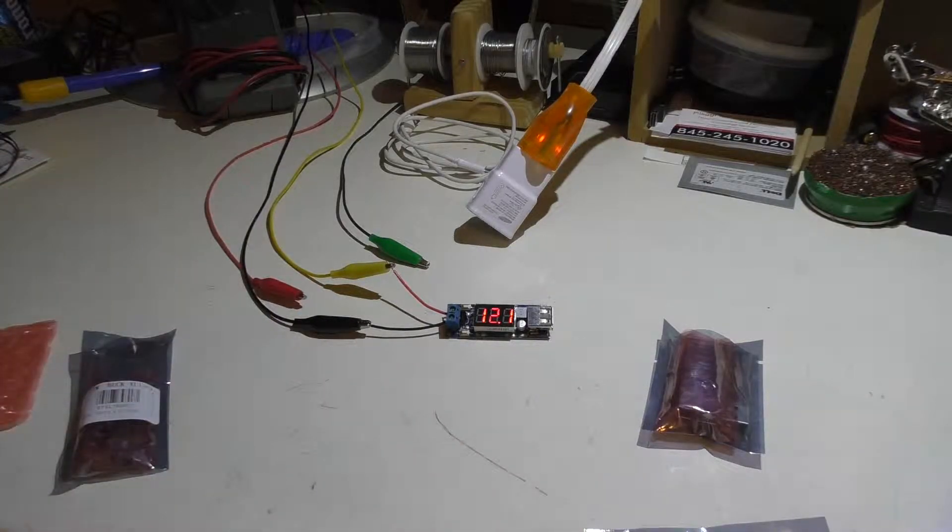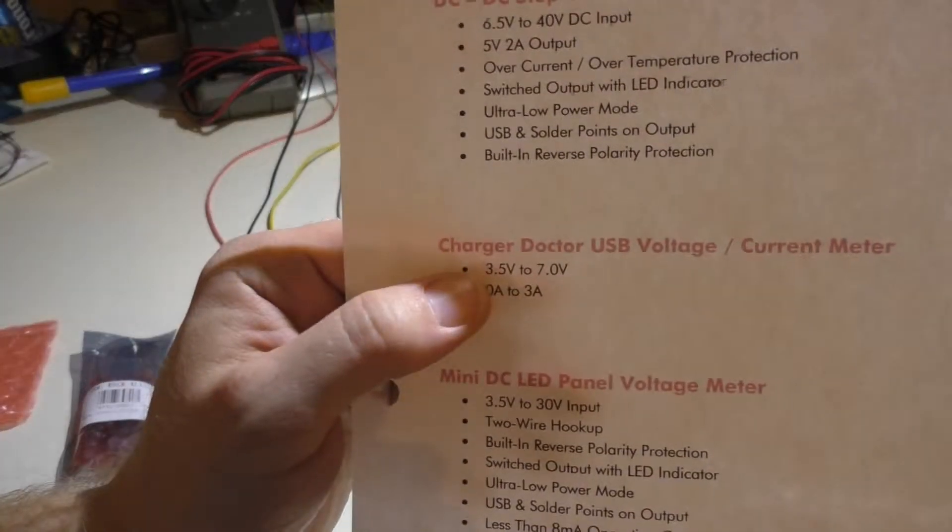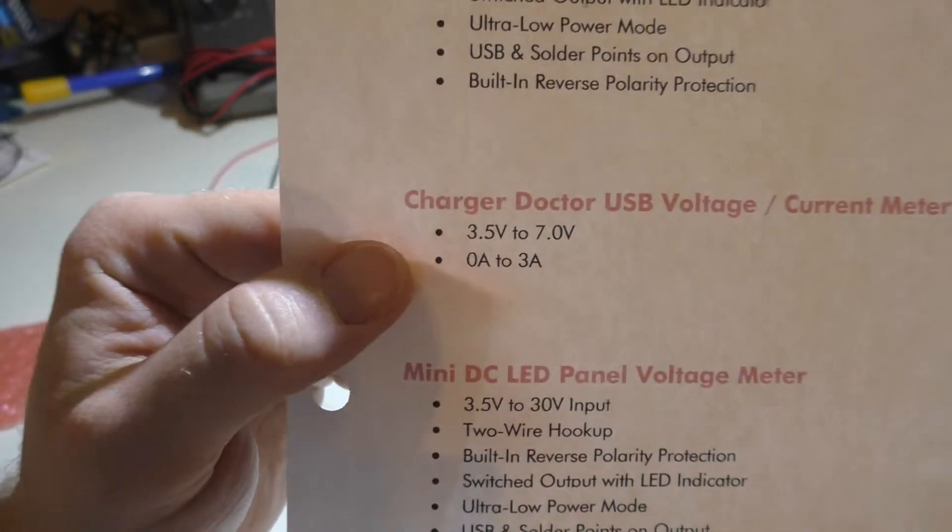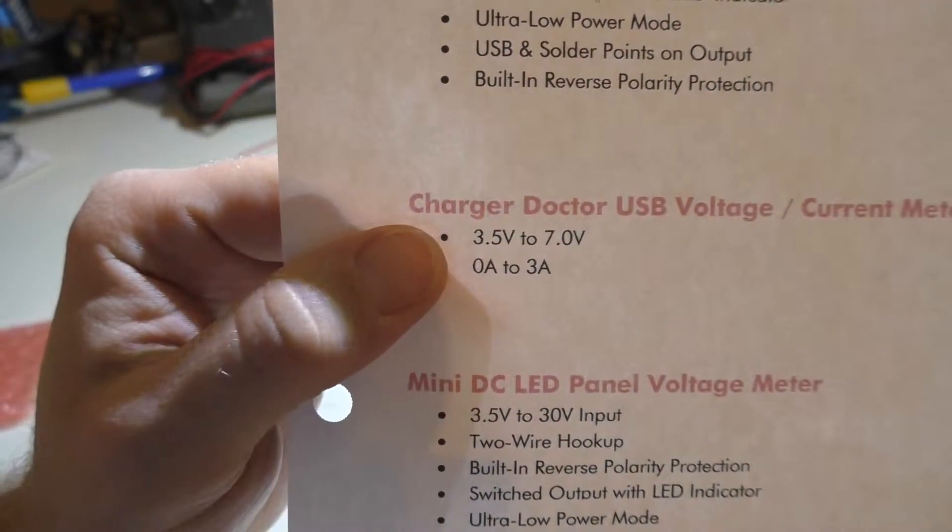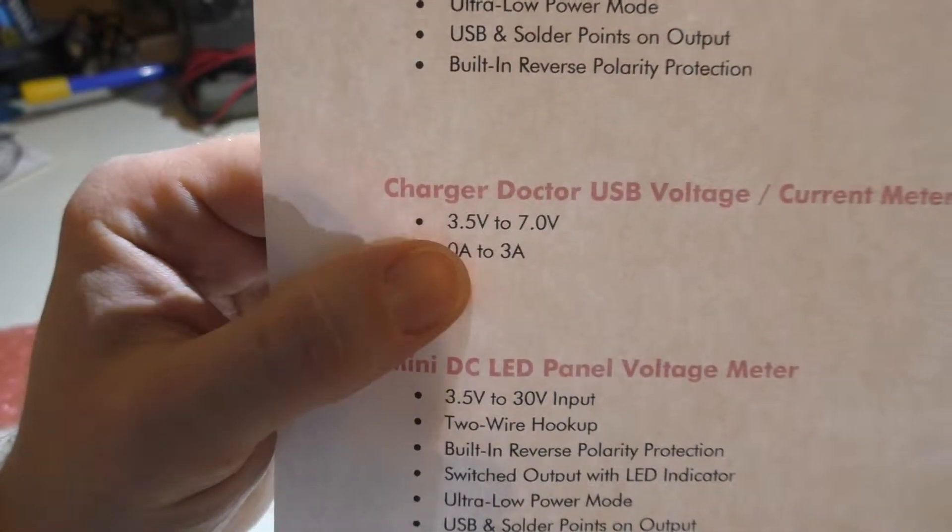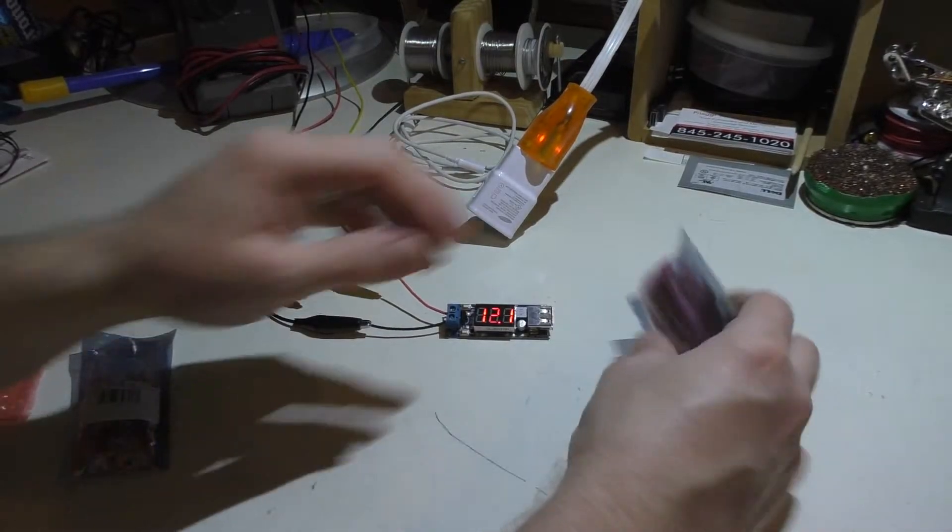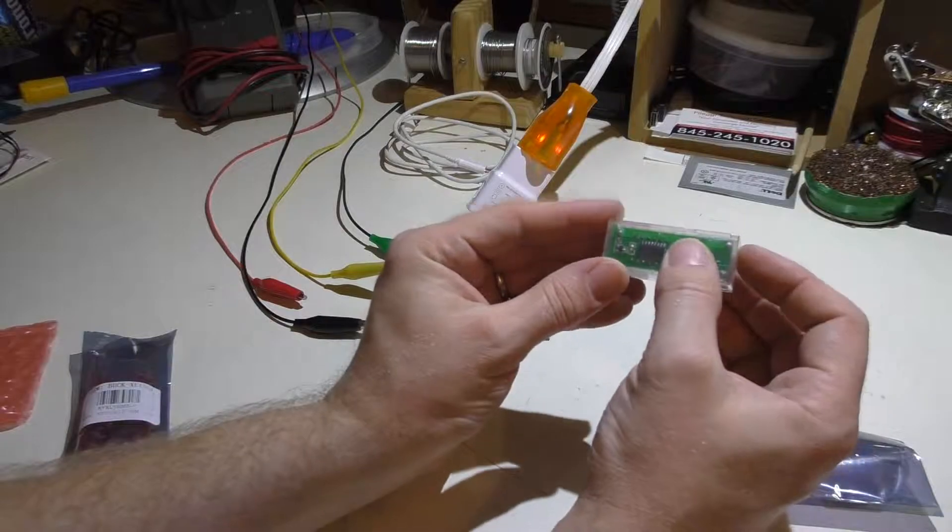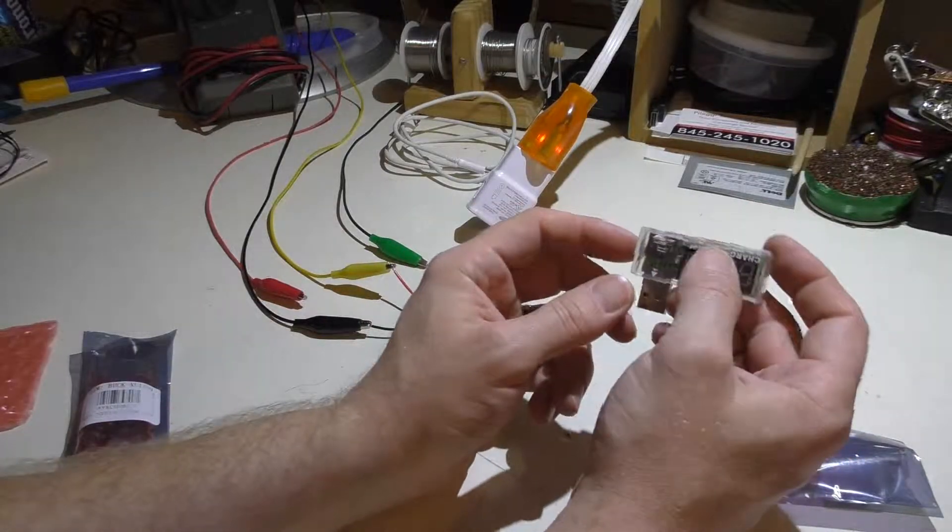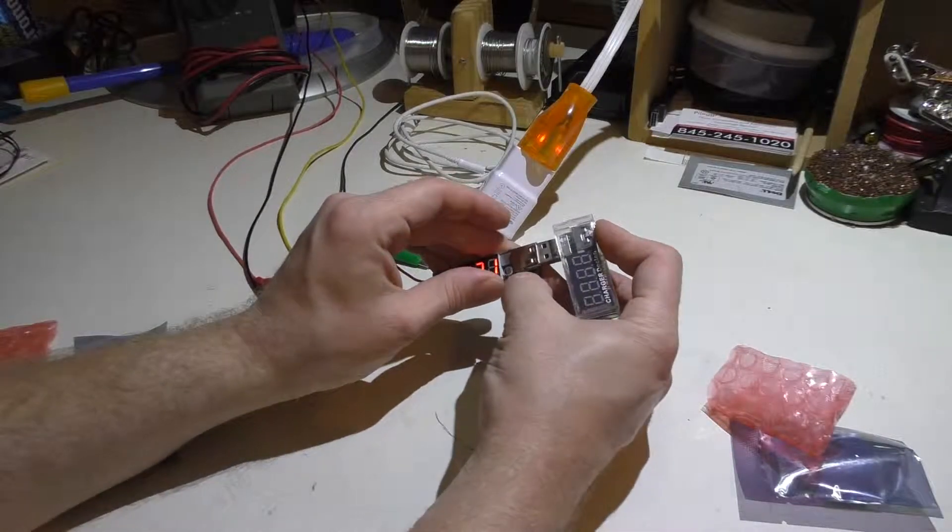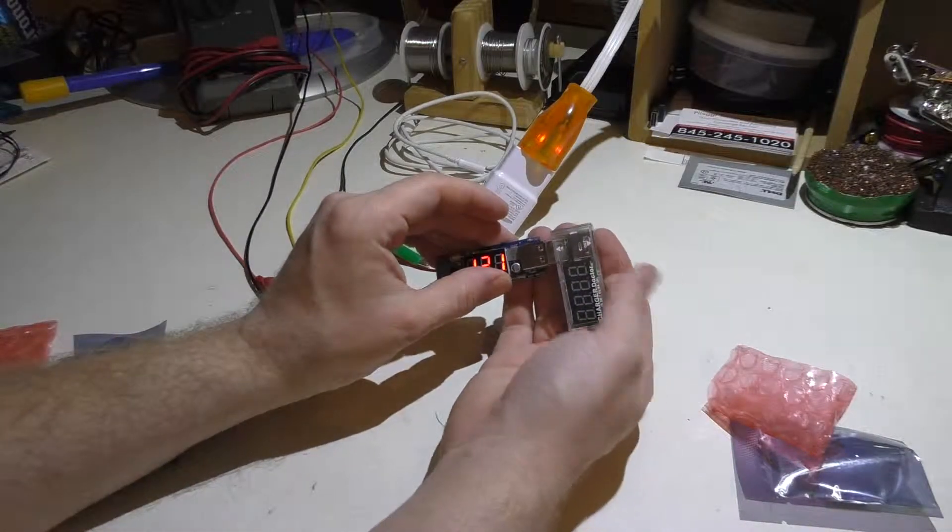The charger doctor. This is a USB voltage current meter. You can test 3.5 to 7.0 volts in a range of 0 to 3 amps. So if I show you that one, that's this guy here. And this one's nice because it's got this plastic case. And this one's simple. Really, you just plug it directly in. And this one's going to light up here in a second.